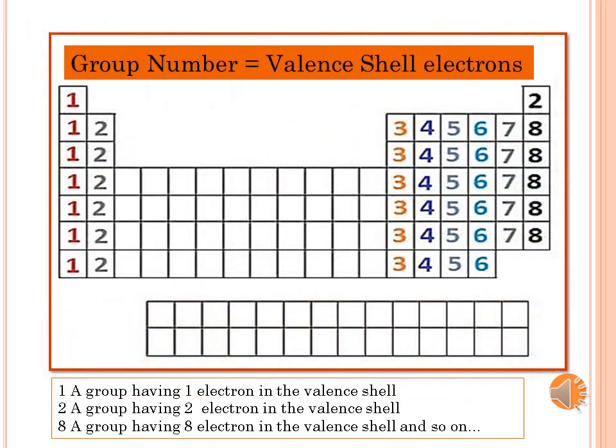Remember that group number equals valence shell electrons: 1a group having 1 electron in the valence shell, 2a group having 2 electrons in the valence shell, 8a group having 8 electrons in the valence shell.